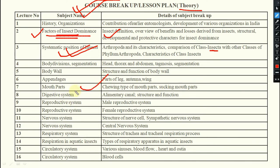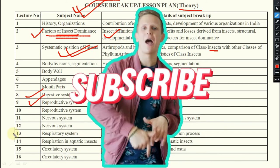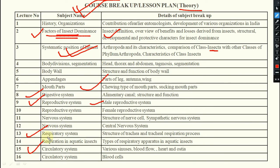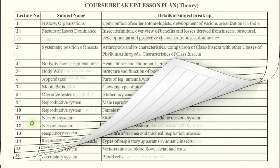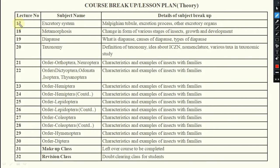Under physiology, we will discuss the digestive system, reproductive system — both male and female — nervous system, respiratory system, circulatory system, and excretory system. We will also cover metamorphosis, diapause, dormancy, and the differentiation between these concepts.